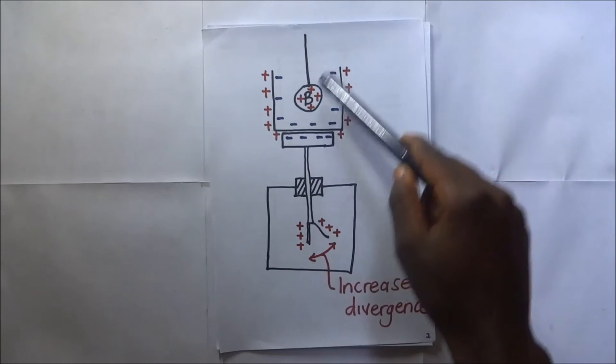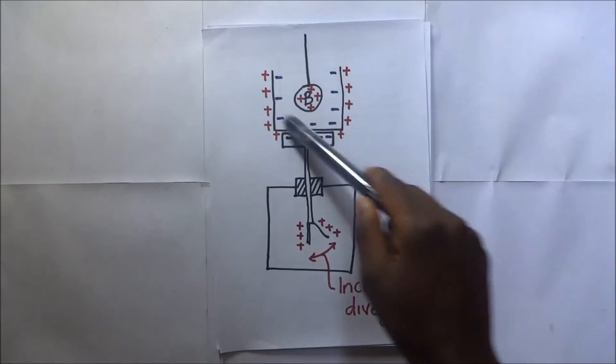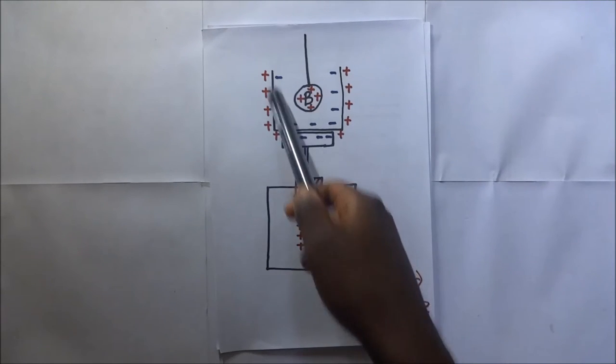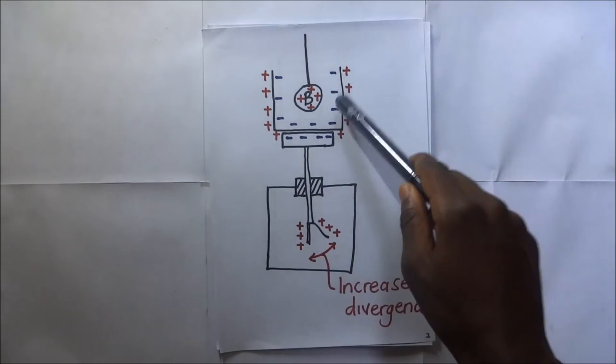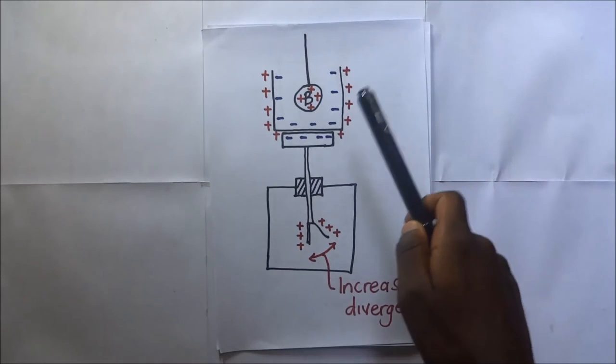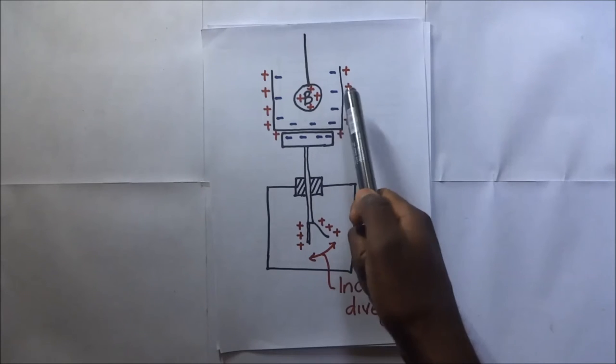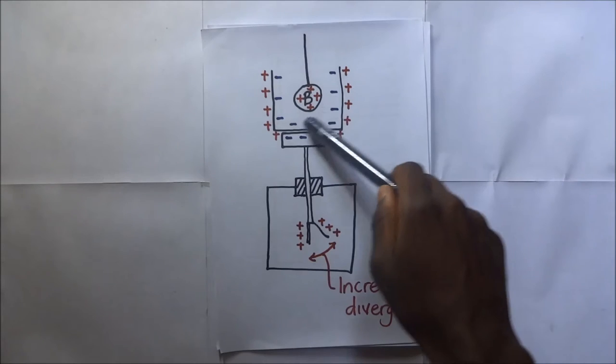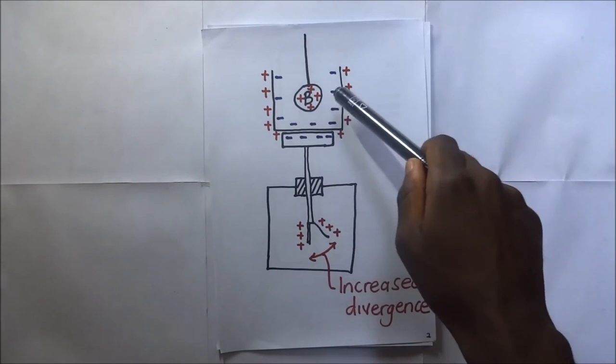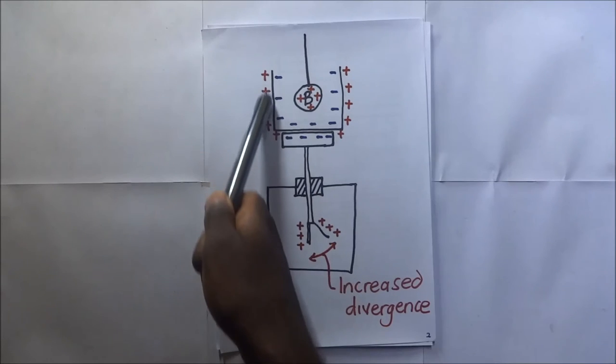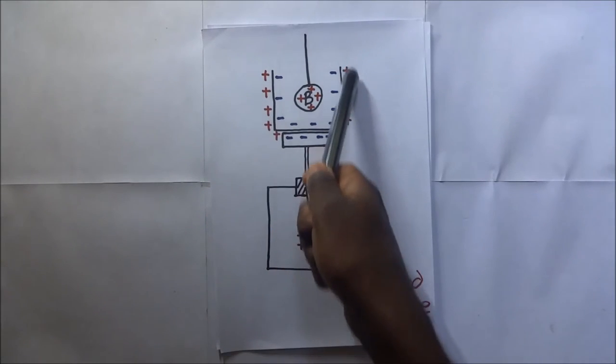Sphere B being positively charged is going to induce a negative charge around. Now this negative charge that has been induced inside the ice pail as a result of this positive charge is also going to induce a positive charge outside the ice pail. So the negative charge inside the ice pail induces a positive charge outside the ice pail.